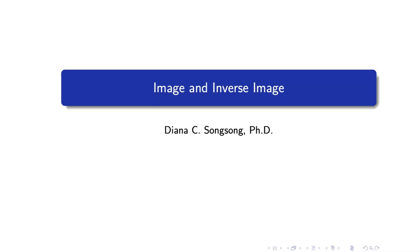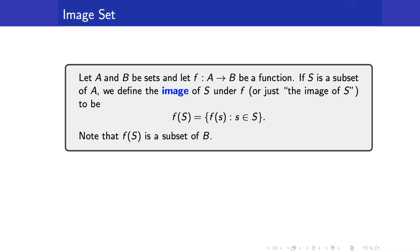In this lesson, we are going to study image and inverse image. Suppose that we have a function from a set A to set B. If S is a subset of A, we define the image of S under F to be this set. It is denoted by F of capital S. This contains elements of the form F of small s for some small s in S. Note that F of capital S is a subset of B.